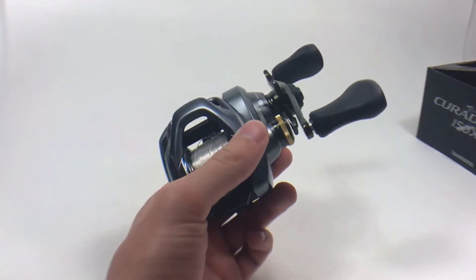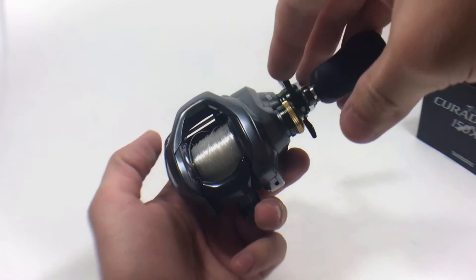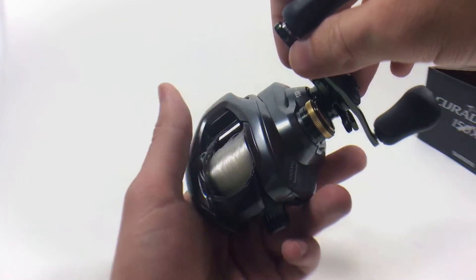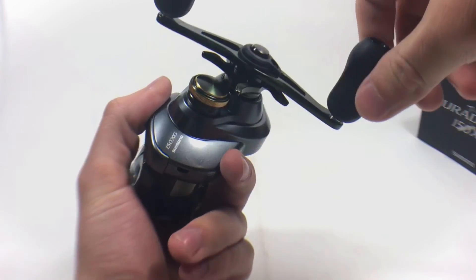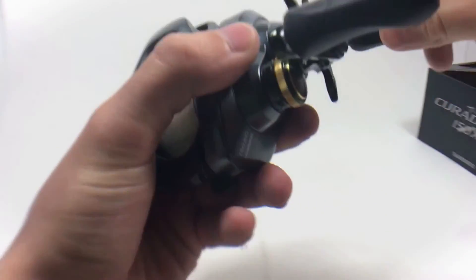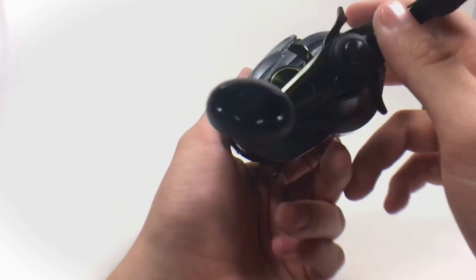But my thoughts on the DC brake, I love it. Never had any issues with backlashes or anything else and honestly overall the build of this reel seems like another reel I'm probably just going to have for another 10 years. So yeah, that is the Curado DC.